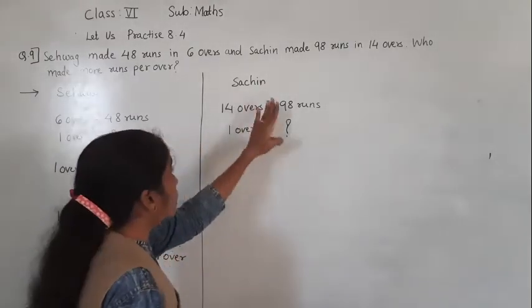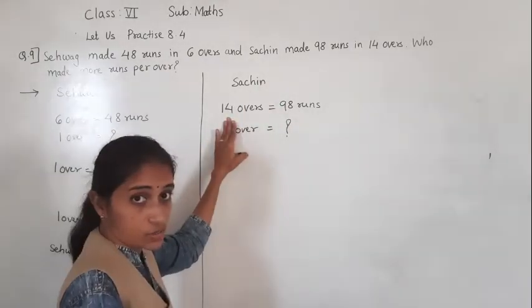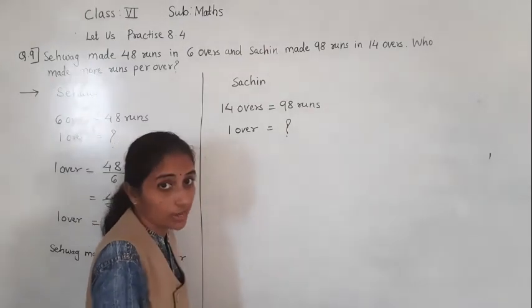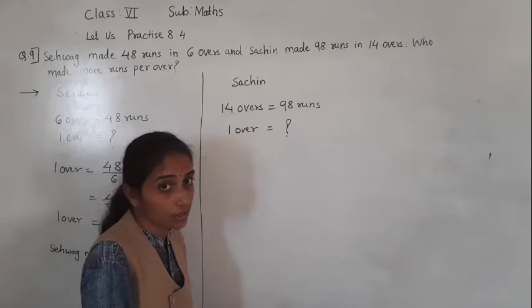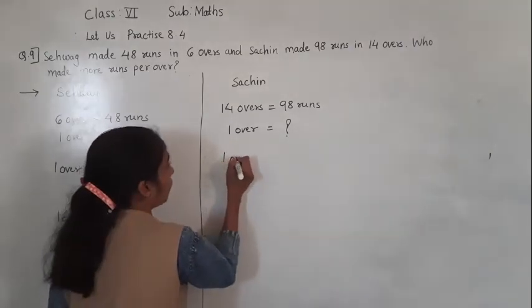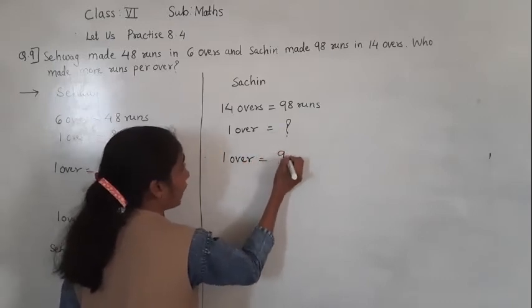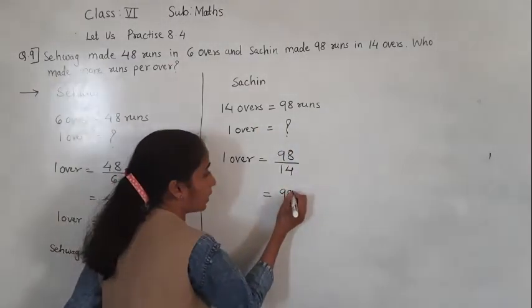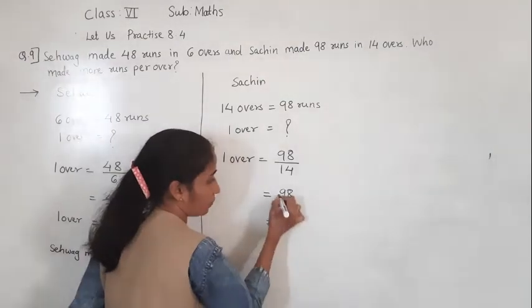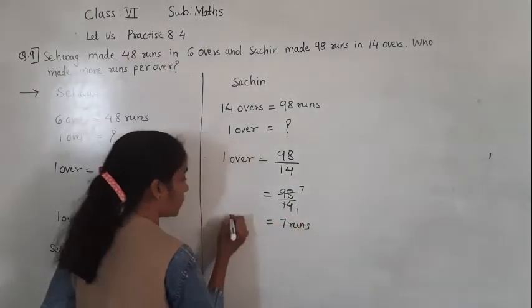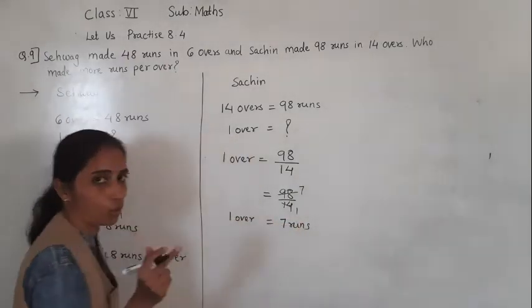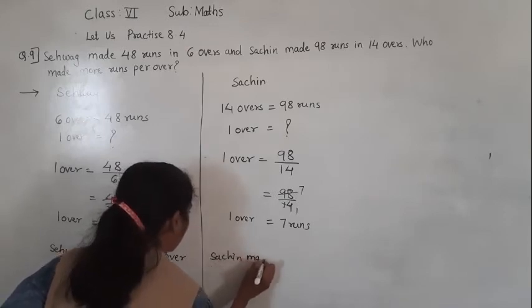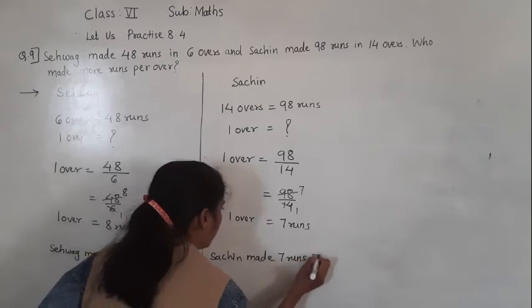Now let's find for Sachin. Sachin made 98 runs in 14 overs. We have to find for 1 over. It is given for many and we have to find for 1, so we divide. For 98 runs divided by 14: 14 sevens are 98, so 7 runs. Sachin made 7 runs per over.